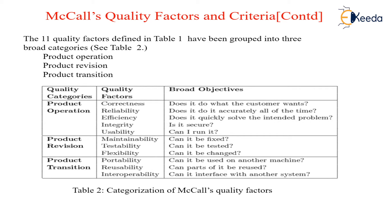The software quality factors and their criteria relate to three things: product operations, product revisions, and product transitions. The 11 factors are categorized accordingly. In product operation: correctness, reliability, efficiency, integrity, and usability. In product revision: maintainability, testability, and flexibility. In product transitions: portability, reusability, and interoperability. These categories address whether the software can be fixed, changed, or tested effectively.